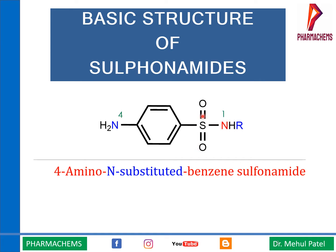This sulfamido group has a substitution, which is why it is called an N-substituted sulfonamide, and there is a primary amide. When we break down this structure, we can identify the substituted sulfonamide, the benzene ring, and the 4-amino group. That is why these derivatives are named 4-amino substituted benzene sulfonamide. This is the basic structure you need to remember to understand the structural activity relationship.